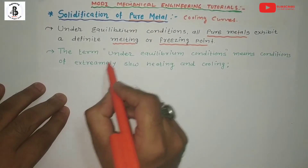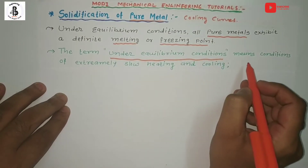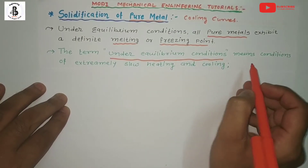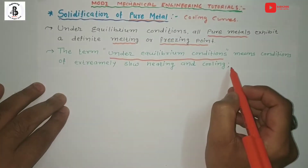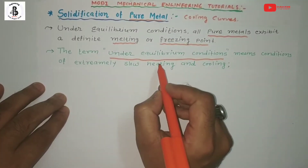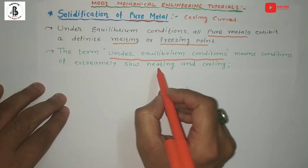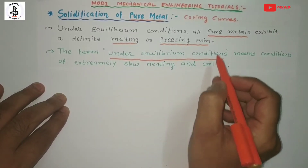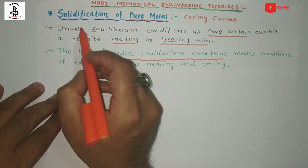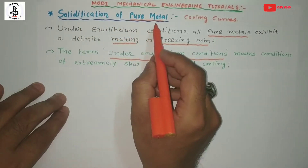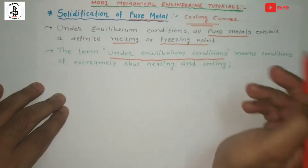The term 'equilibrium conditions' means extremely slow heating and slow cooling. In this theory, we are focusing on the cooling of the pure metal. It will be talking about solidification of pure metal by means of cooling curves.